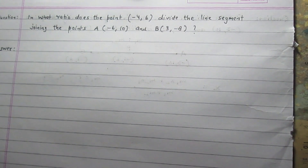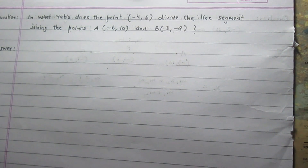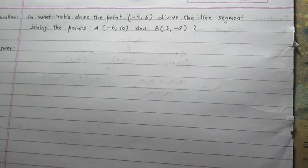In what ratio does the point with coordinates minus 4 and 6 divide the line segment joining the points A with coordinates minus 6 and 10, and B with coordinates 3 and minus 8?